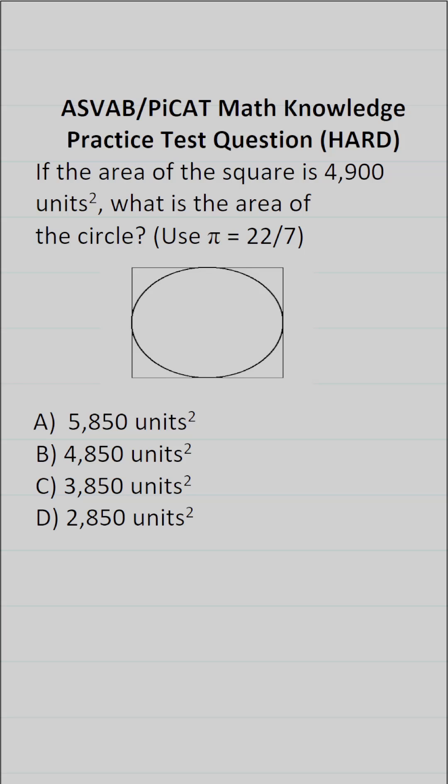This math knowledge practice test question for the ASVAB and PyCat says, if the area of a square is 4,900 square units, what is the area of the circle? Use 22 over 7 for pi.